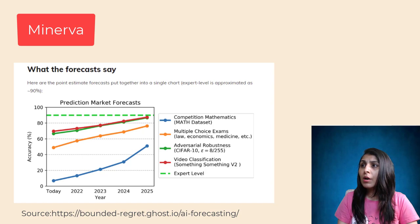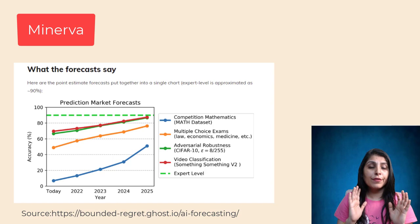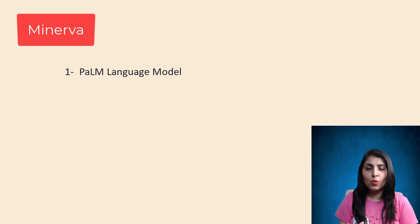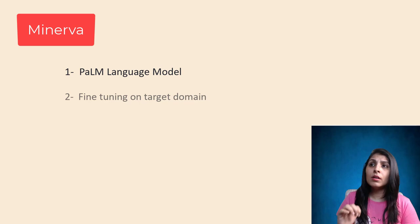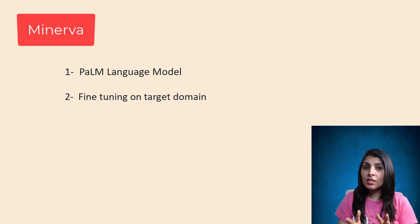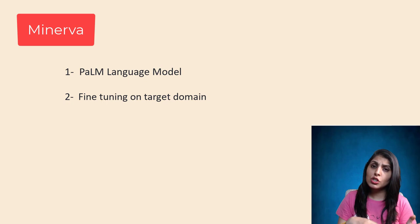Now let's see how the Minerva model was actually developed. First, they used the PaLM language model as a base. Then they did fine-tuning on a target domain, which is technical content—the 118GB dataset of scientific papers from arXiv preprint servers and web pages containing mathematical expressions.